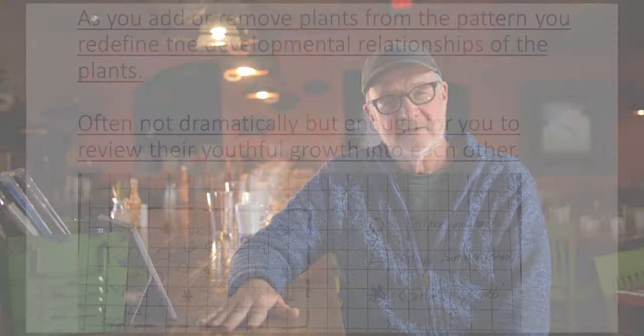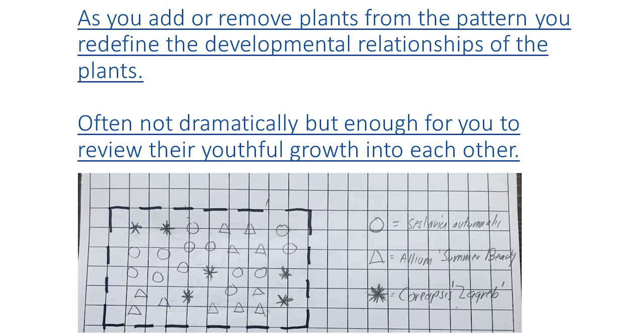The next image shows the same grid with one addition: Coreopsis 'Zagreb'. By adding just one element, you can see how that changes the pattern and redefines how the Ceslaria and Allium relate to each other. This is just a beginning example — you could take Echinacea and Perovskia, or Ratibida pinnata and Little Bluestem. If you know their growth rate and growth habit, you can determine what percentages of plants, based on how they relate from youth to maturity, will combine and live together successfully year after year. Once you know their growth rate and growth habits seasonally and after maturity, that will never change — just as I know my arm isn't going to grow another foot.